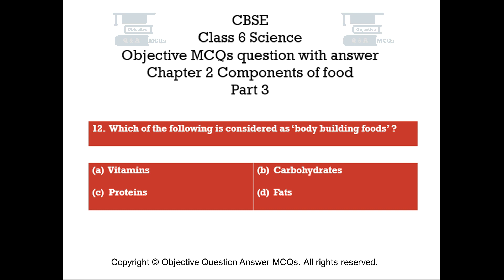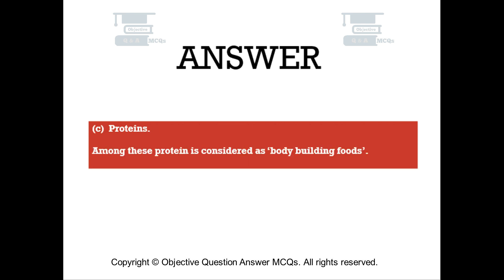Question number 12: Which of the following is considered as body-building foods? Option A: Vitamins. Option B: Carbohydrates. Option C: Proteins. Option D: Fats. The right answer is Option C — Proteins. Among these, protein is considered as body-building food.